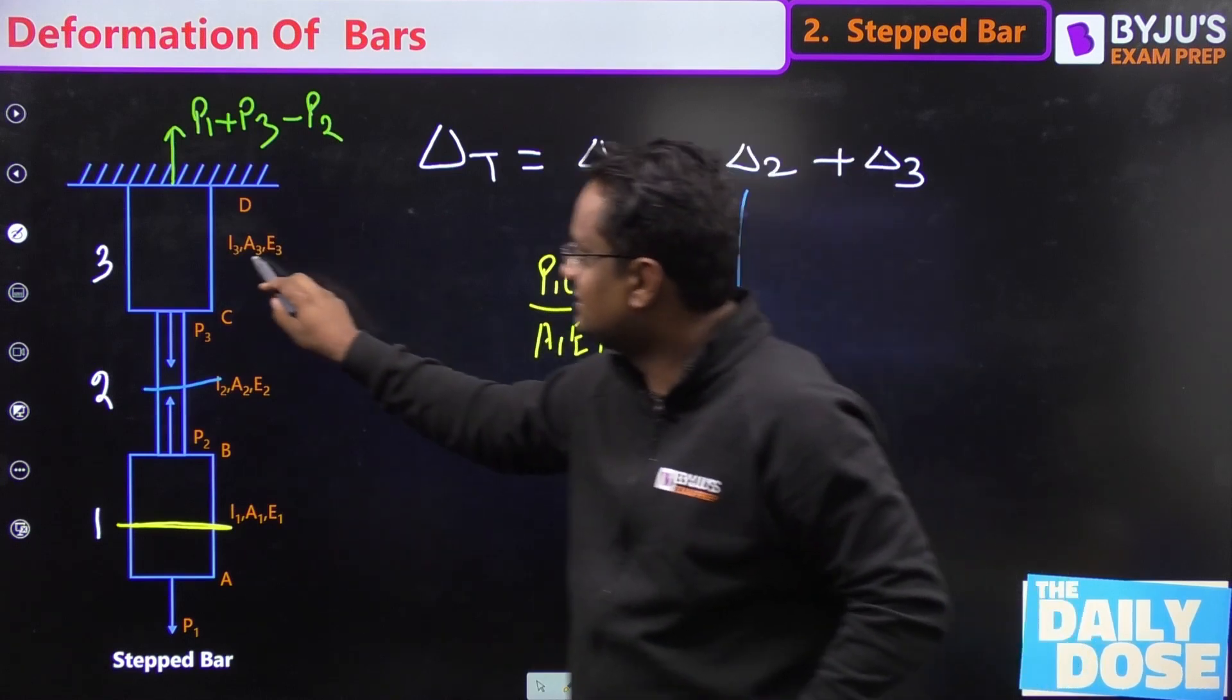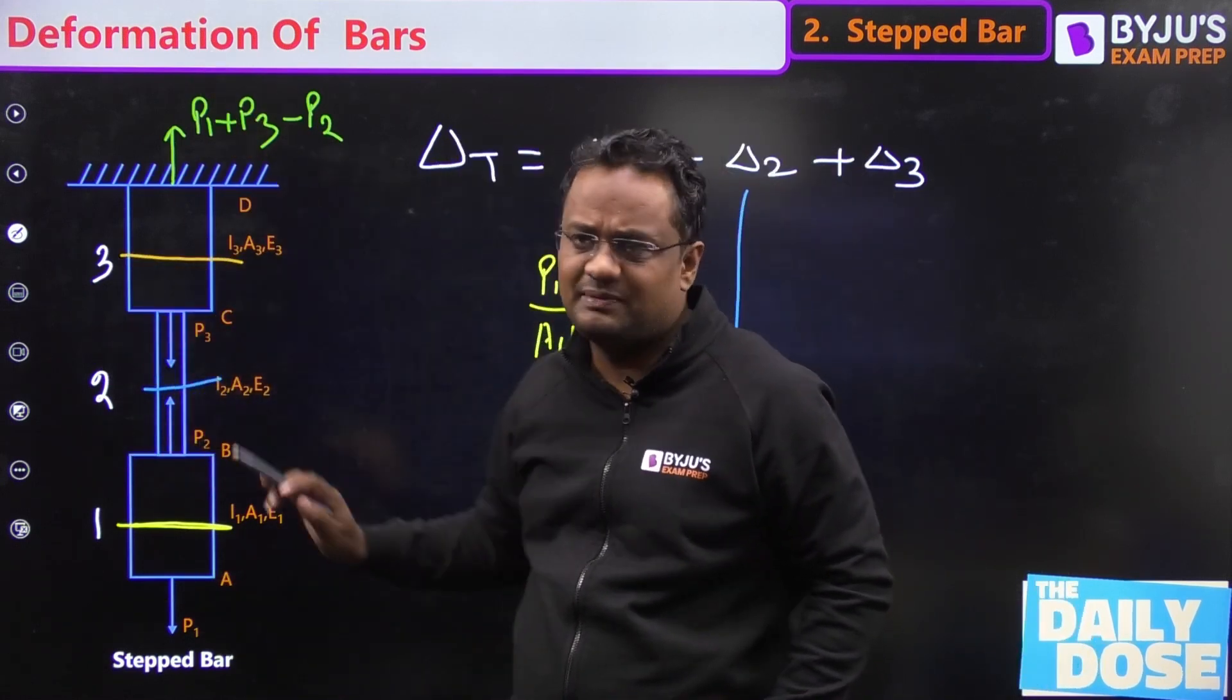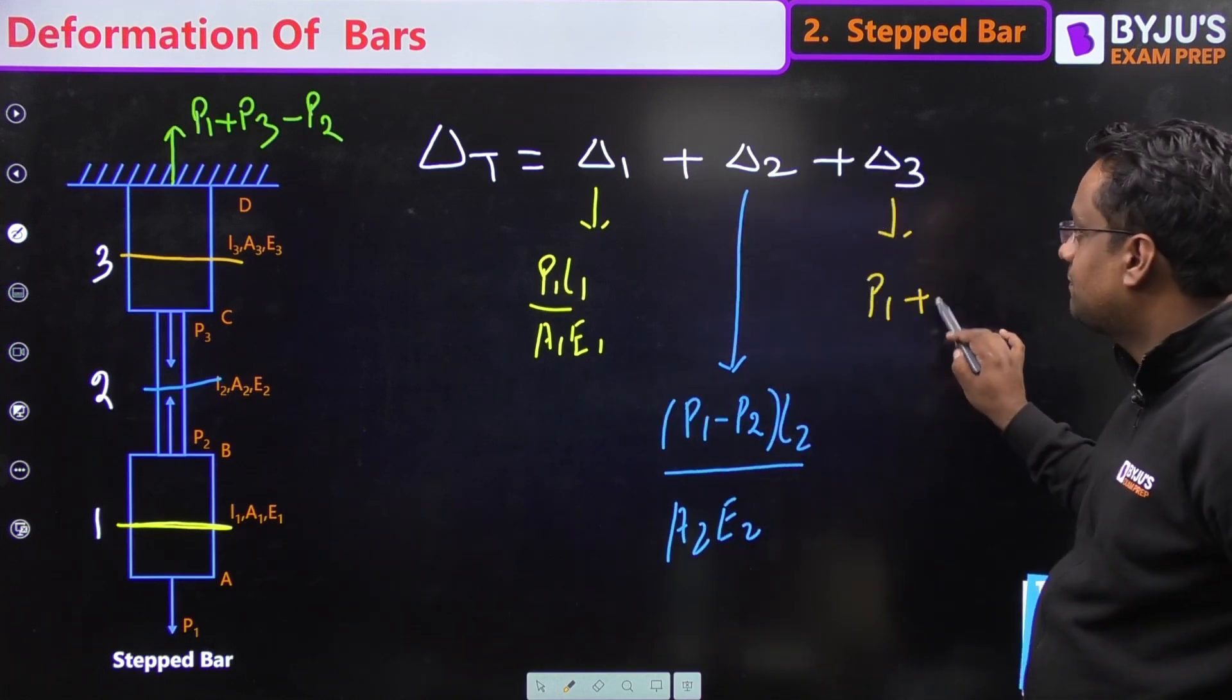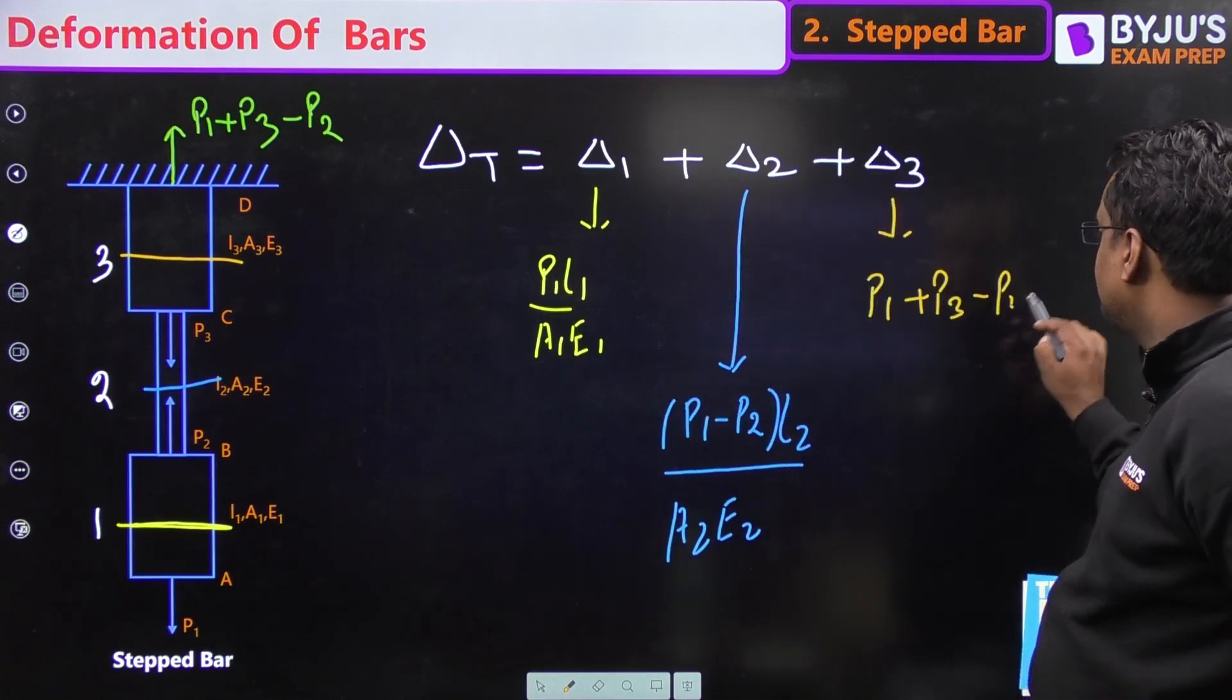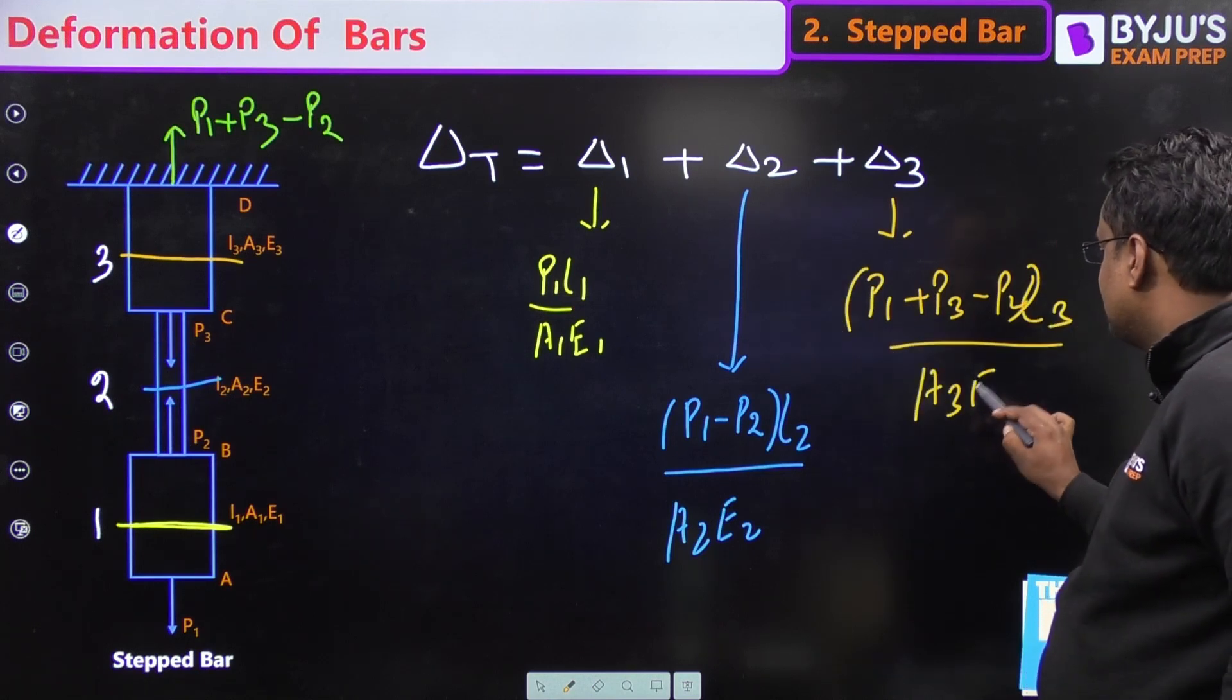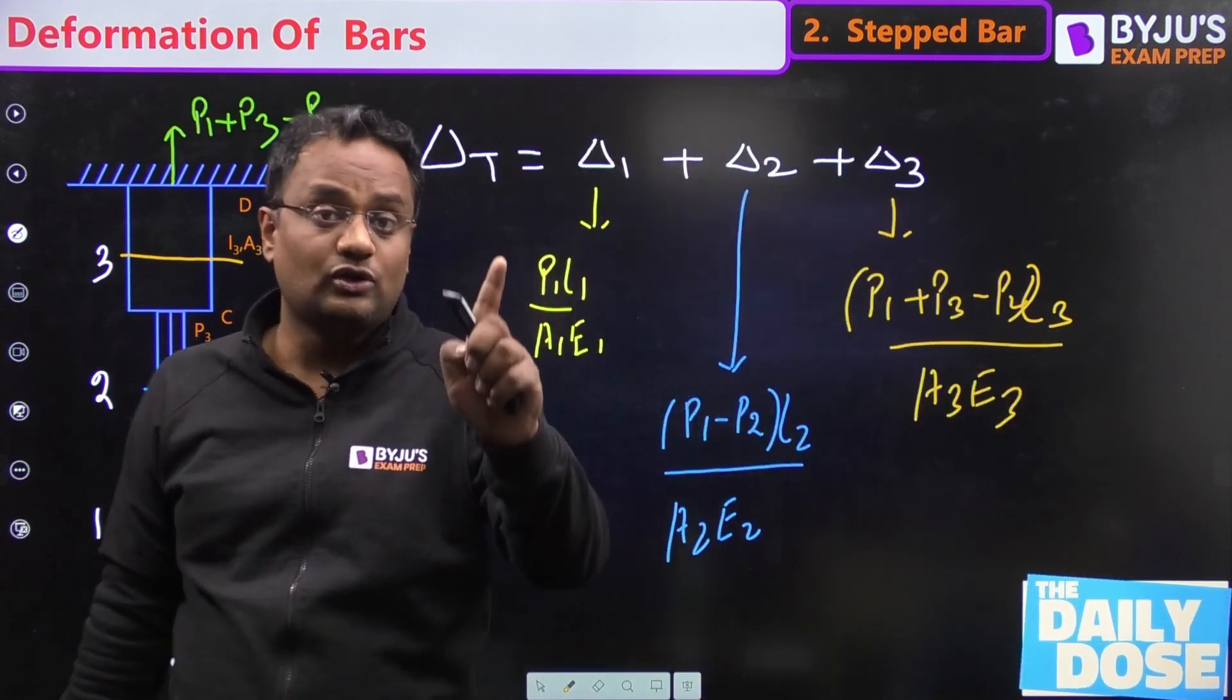Now going for the section 3, it is easier to see from top, why to see from bottom, all the answer will be same. So from top it will be P1 plus P3 minus P2 into L3 by A3 E3. This is the deformation of the third, and total deformation is delta 1 plus delta 2 plus delta 3.